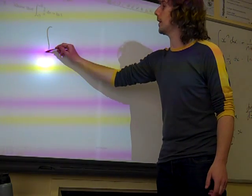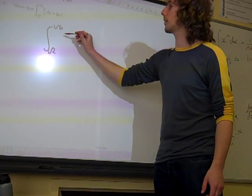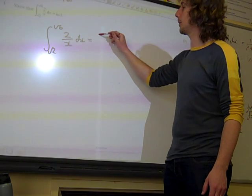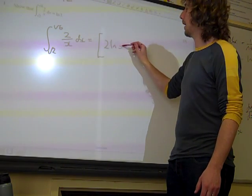So it must be 2 ln x. So the integral from root 2 to root 6 of 2 over x dx is 2 ln x.